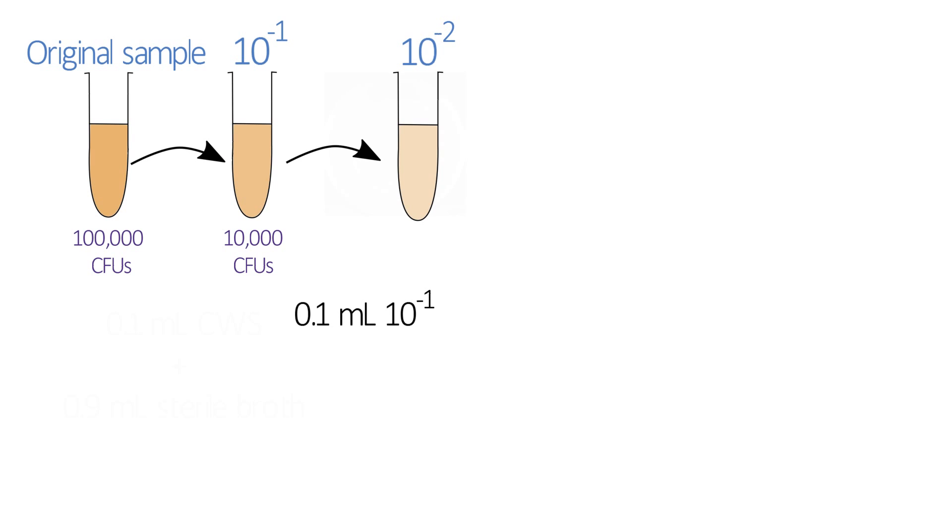So we'll take 0.1 ml of the ten to the minus one dilution and add it to a fresh 0.9 ml of sterile nutrient broth, so this has now been diluted 100 times compared to the original sample, so we'd expect this sample to have 1,000 colony-forming units in it. We can keep doing this again and again to set up a series of dilutions. In the practical, you'll make dilutions from ten to the minus one to ten to the minus four.